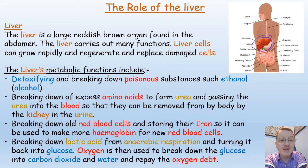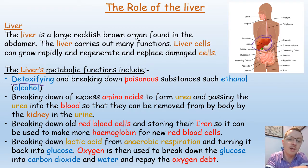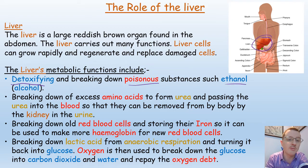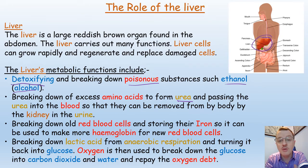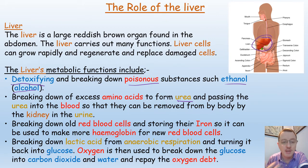The liver carries out many chemical reactions, including detoxifying and breaking down poisonous substances such as ethanol, or alcohol. It also breaks down excess amino acids to form urea, and then passes the urea into the blood so that it can be removed from the body by the kidney in your urine.